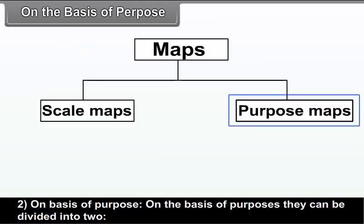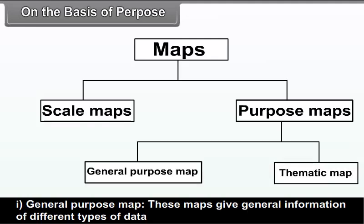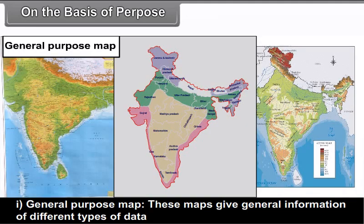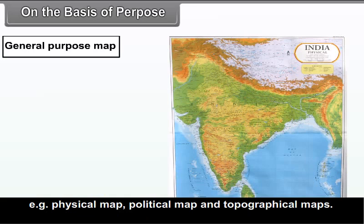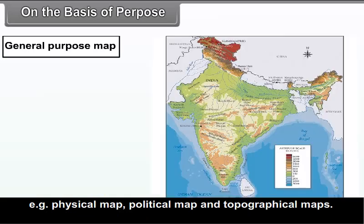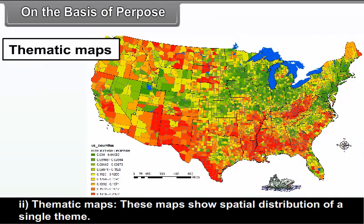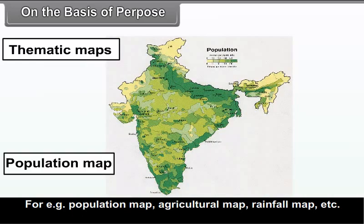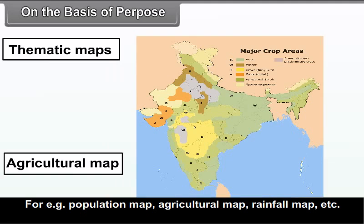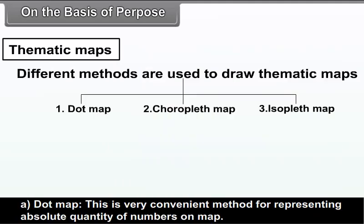On the basis of purpose, maps can be divided into two types. A) General purpose maps give general information of different types of data — for example, physical maps, political maps and topographical maps. B) Thematic maps show the spatial distribution of a single theme — for example, population maps, agricultural maps, rainfall maps, etc. Different methods are used to draw thematic maps.